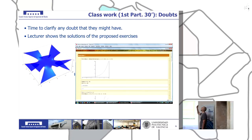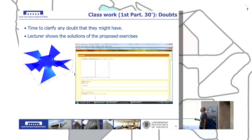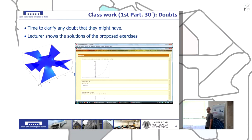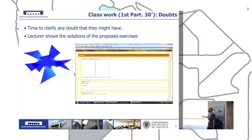When students have done this pre-class work, they come to class and in the first 30 minutes we devote time to clarifying any doubts they might have. Lecturers solve the proposed exercises and, if there is time left, we propose new exercises to do together in class. Additionally, we work with Mathematica software, for which the university has a license that students can use at home or on campus.